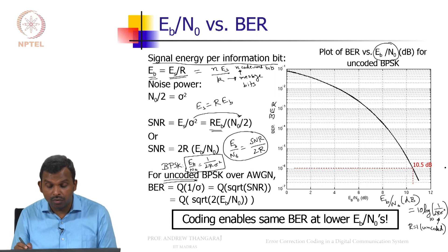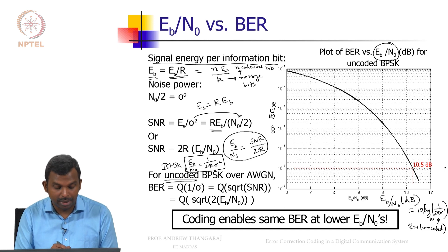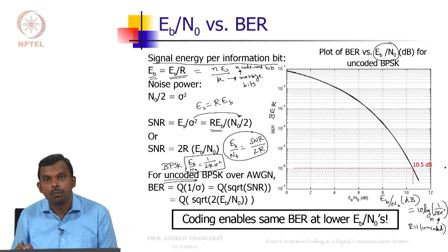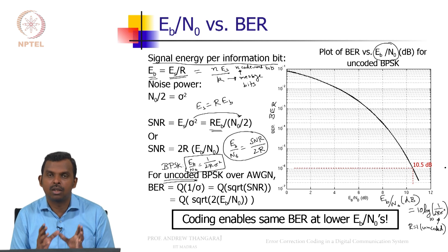So for the uncoded case, we know what BER is with Eb over N0. It is Q of square root of 2 Eb over N0 and you can make this plot. So I will urge all of you to write a small piece of MATLAB or Python or any code you like and generate this graph.